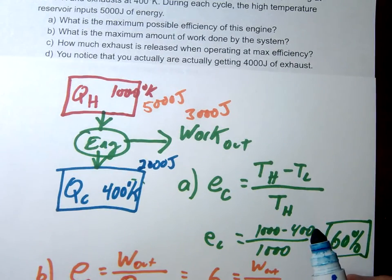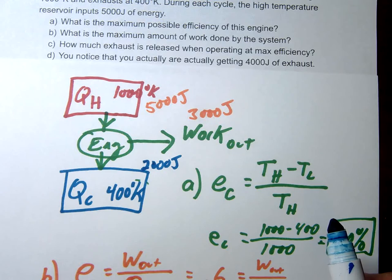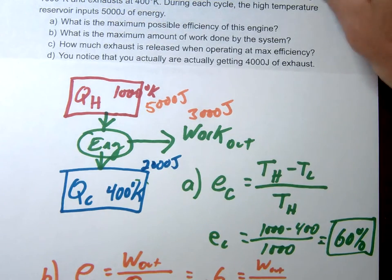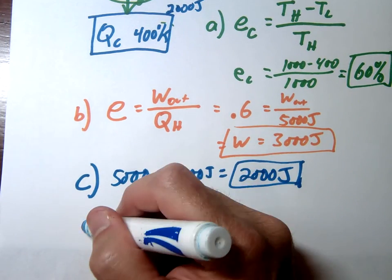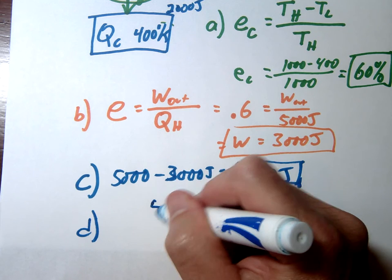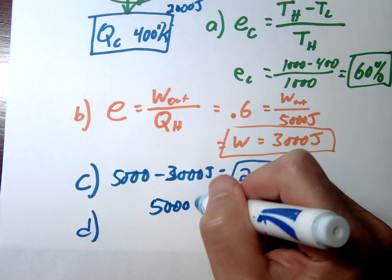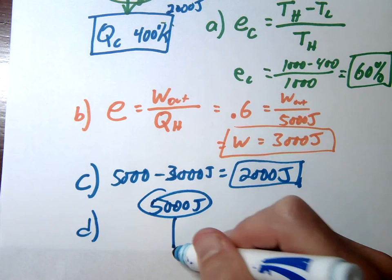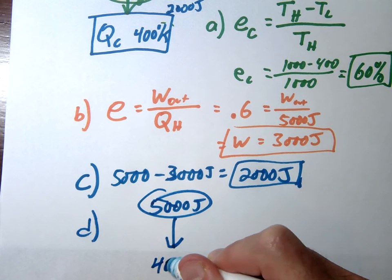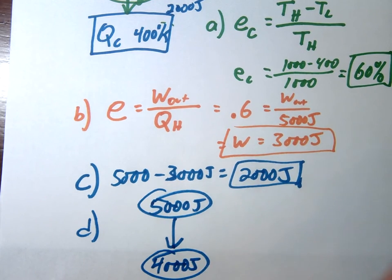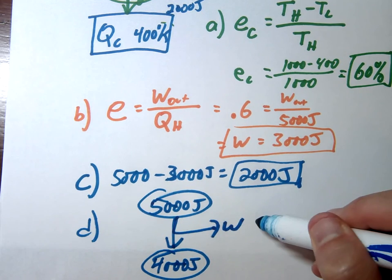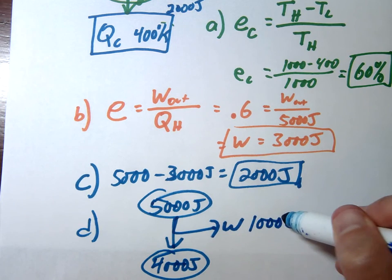All right, so this would be a perfect situation, running at your ideal efficiency. Well, let's say you actually get 4,000 joules. So in other words, you have this 5,000 joules up here in your high reservoir, and you're ending up with actually 4,000 joules down here in the cold reservoir. And they're saying, well, what's the actual efficiency? Well, notice in this case, your work would then be only 1,000 joules.